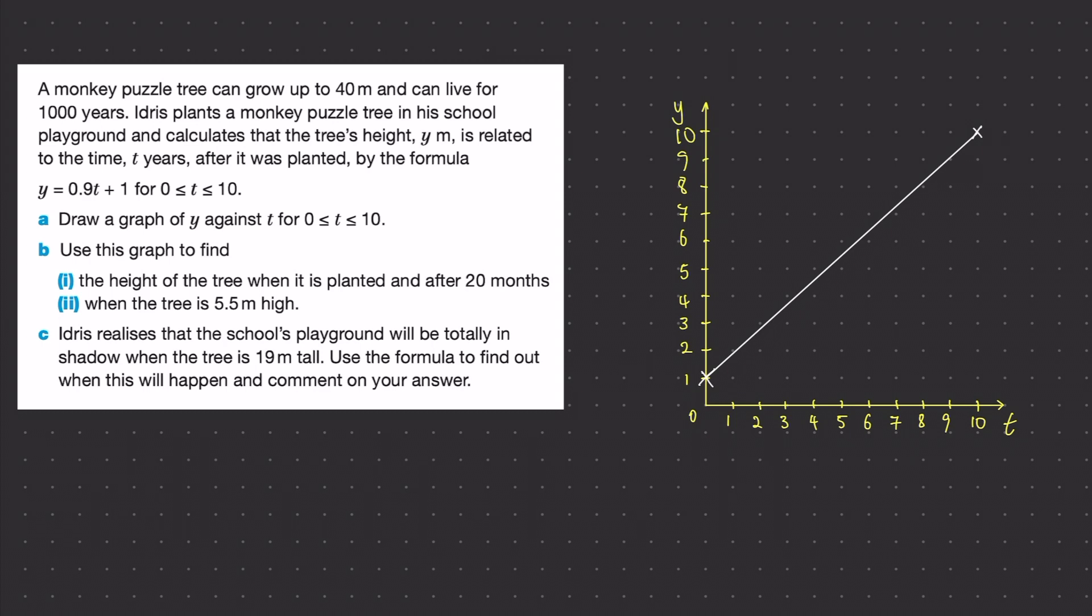Let's do part b now. So when the tree is planted we've worked out that the y-intercept is 1 and that is when the tree is planted because t = 0. And for the next half of that question we want it after 20 months, which is just below 2 years, so I'd say that looks to be around 2.6 meters tall.